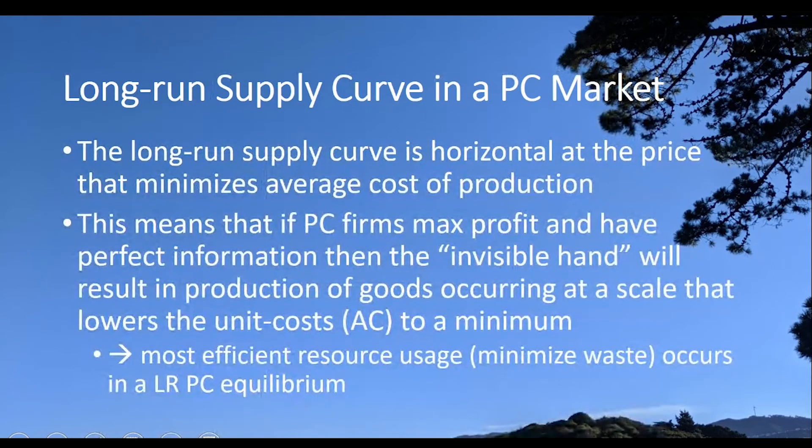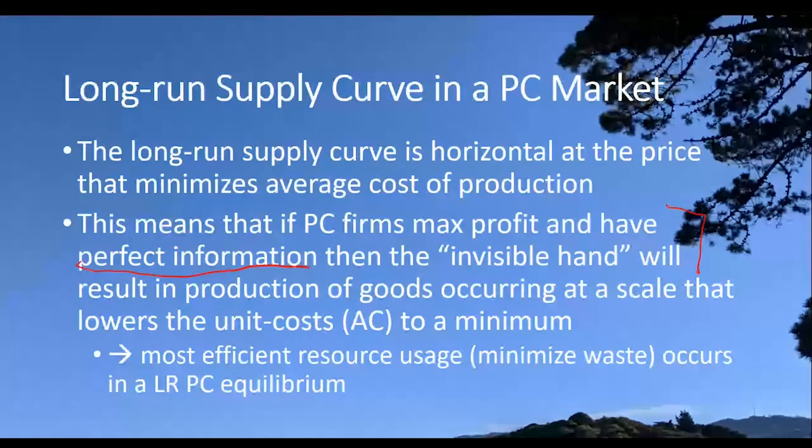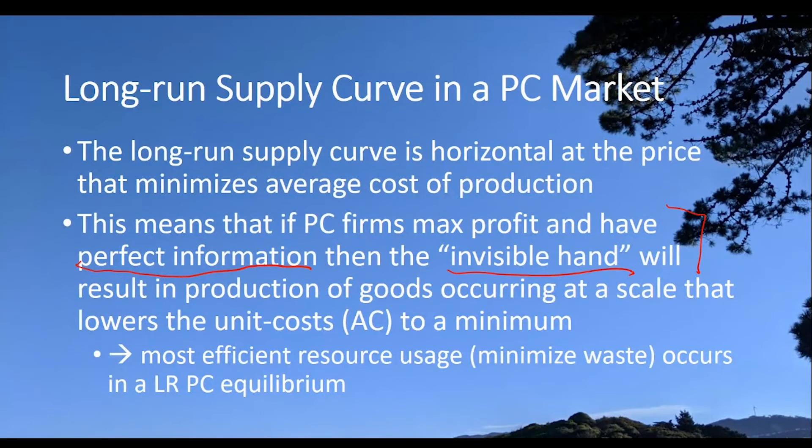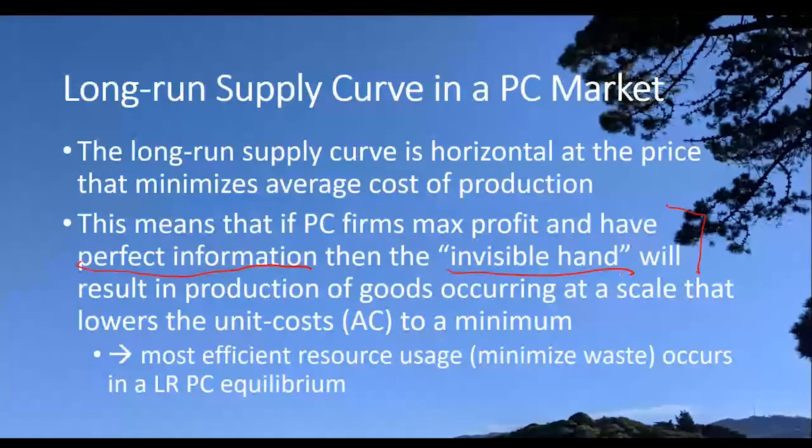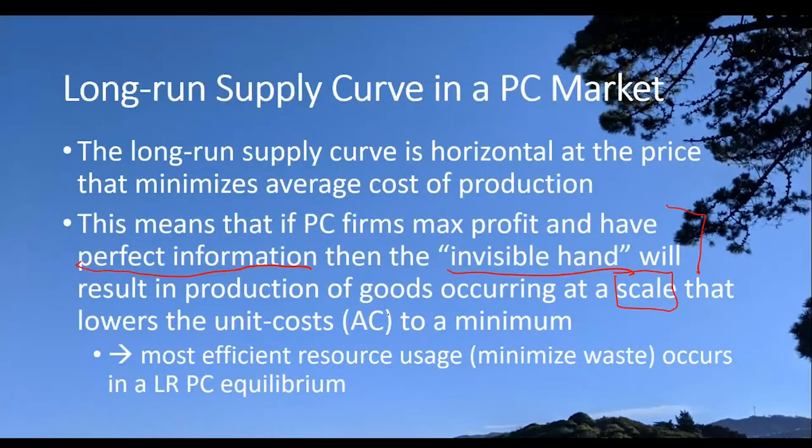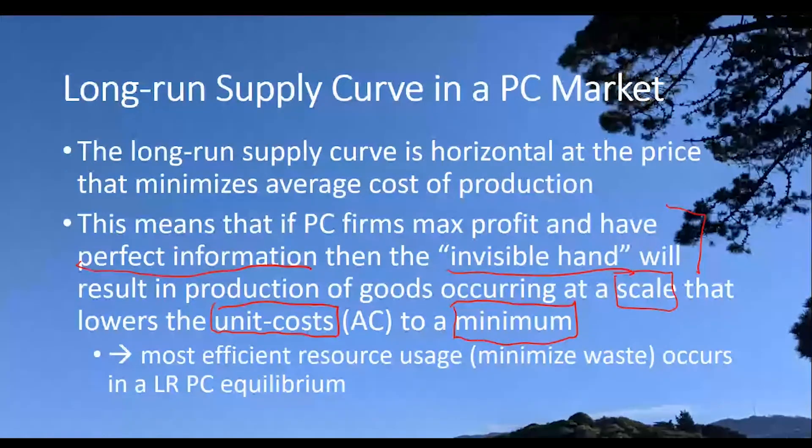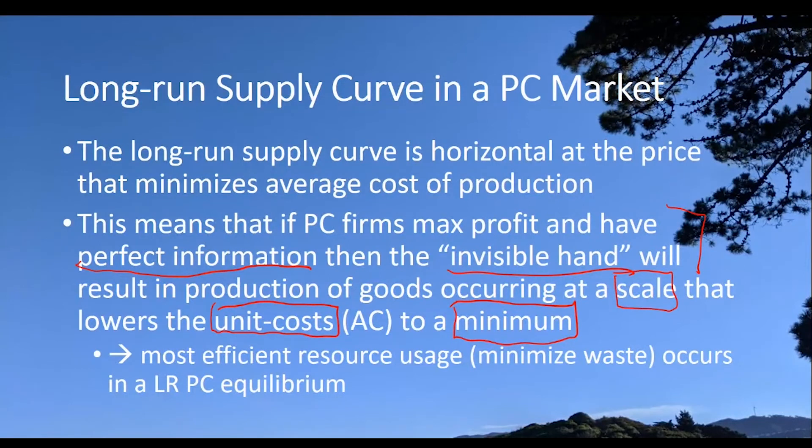Long run supply curve is horizontal at the price that minimizes average cost of production. That means that if a PC firm maximizes profit and has perfect information, then the invisible hand is going to result in a production of goods occurring at a scale, that means a level of production, that lowers the unit cost to a minimum. Average cost, unit costs. And by the way, I use this term sometimes, unit costs, costs of one unit. That's an equivalent term to saying average cost of production of a particular good. So the cost per unit is the same as average cost.